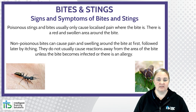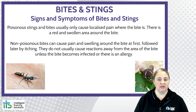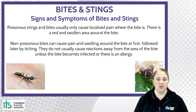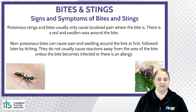Poisonous stings and bites usually only cause localised pain where the bite has occurred, and there is sometimes a red swollen area around the bite. Non-poisonous bites can cause pain and swelling around the bite at first, followed by itching later on.